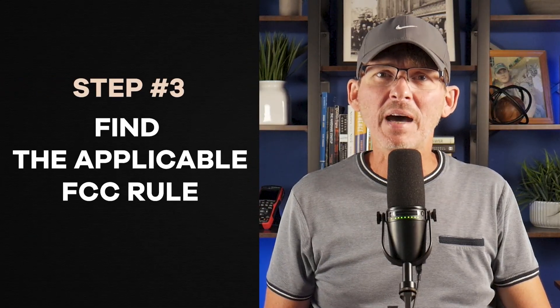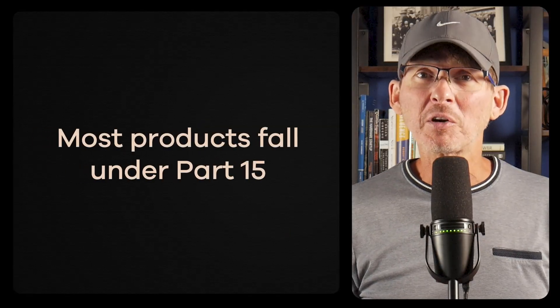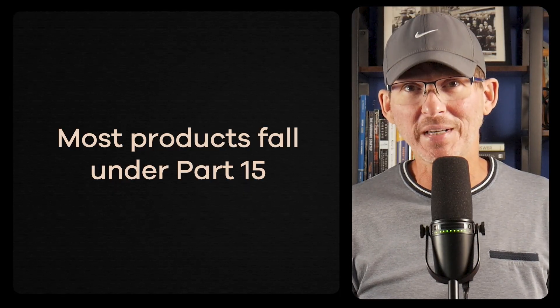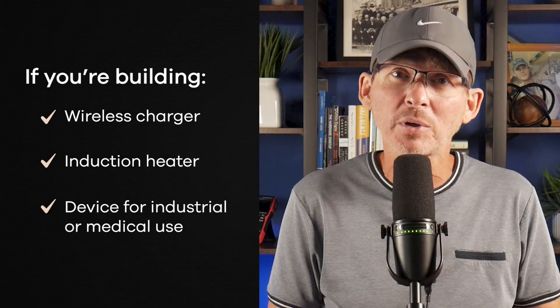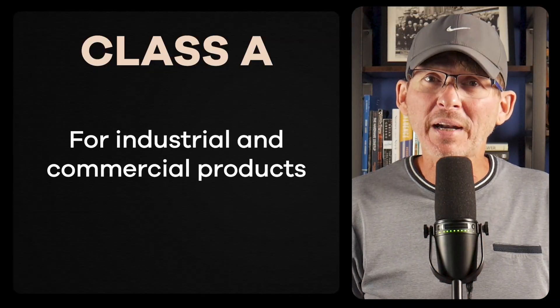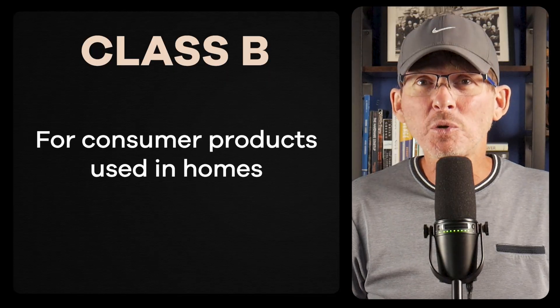Step three: find the FCC rules that apply to your product. Once you know your product type and which path you're on, you need to figure out which FCC rules apply. Most products fall under Part 15, which covers both intentional and unintentional radiators. If you're building something like a wireless charger, induction heater, or a device for industrial or medical use, you might fall under Part 18 instead. You'll also need to know if your product is Class A or Class B — Class A is for commercial and industrial products, Class B is for consumer products used in homes. Class B limits are much stricter, so if you're selling to consumers, plan for that early.